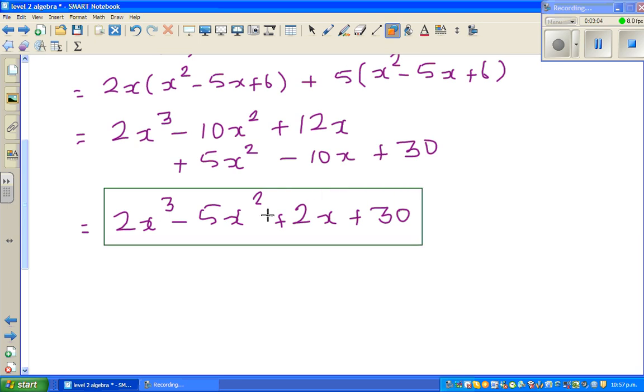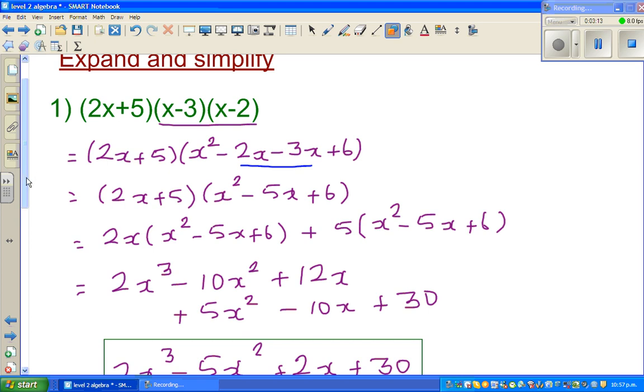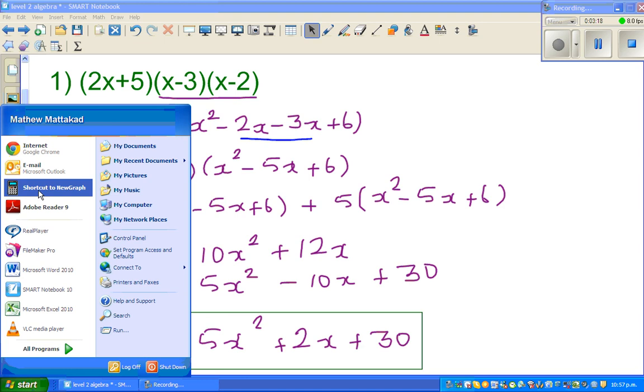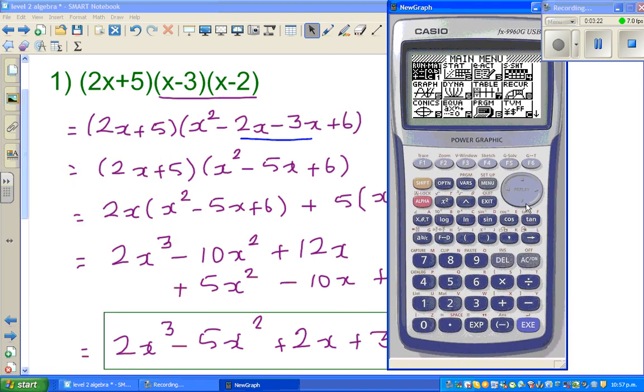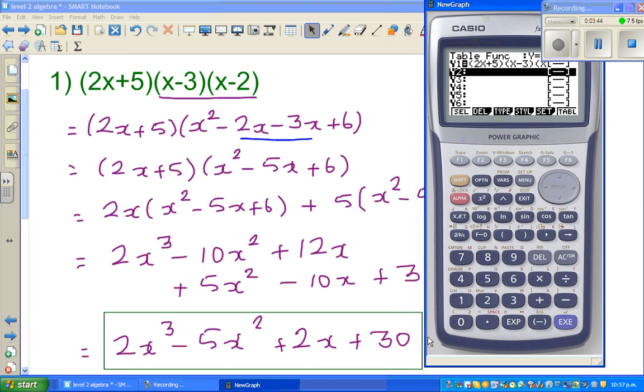I'll use a graphic calculator in a subtle way, in a cunning way to check my answer. So I'm getting a calculator out. Go to the table menu. First type in the question in y1, which is 2x plus 5 times x minus 3 times x minus 2. And the answer in y2, so 2x cubed minus 5x squared plus 2x plus 30. And then go to set and look at the table.